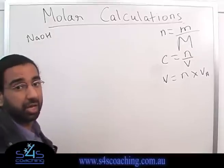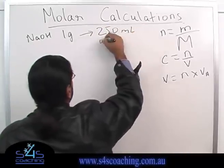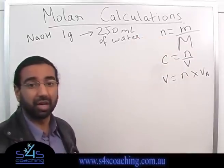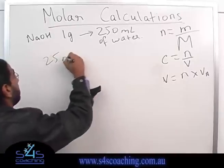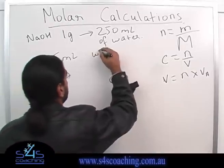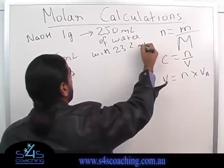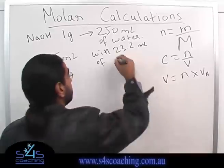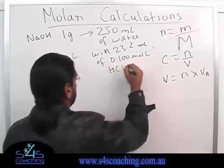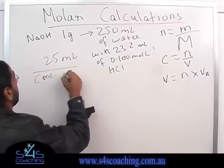Alright, he takes sodium hydroxide and dissolves one gram of sodium hydroxide in 250 milliliters of water. So alright, these questions are in the PowerPoint associated with this, so just have a look at that. And then what he does is he titrates 25 milliliters of the solution with 23.2 milliliters of 0.100 moles per liter of hydrochloric acid. And what they're asking me to do is they're asking me to find the concentration of NaOH.